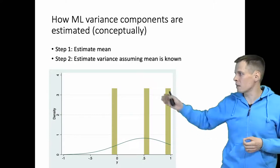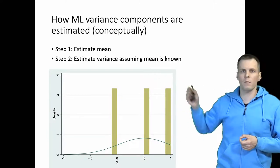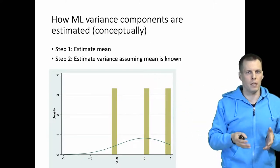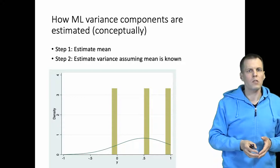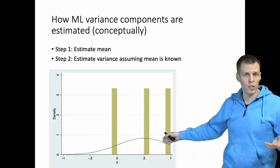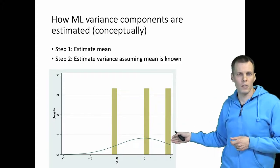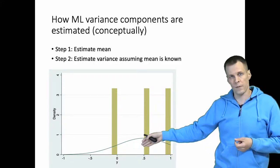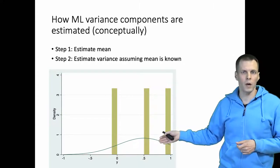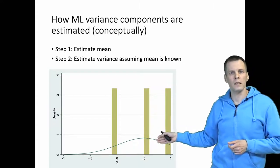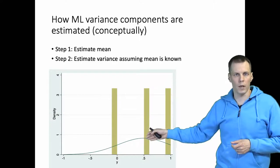We first estimate the mean and then we estimate the variance assuming the mean is known. So we are interested in estimating here the normal distribution, so we have the mean and standard deviation. The estimation problem, finding the mean, that's very straightforward and ML gets that right. But estimating the standard deviation or variance is a bit more complicated.